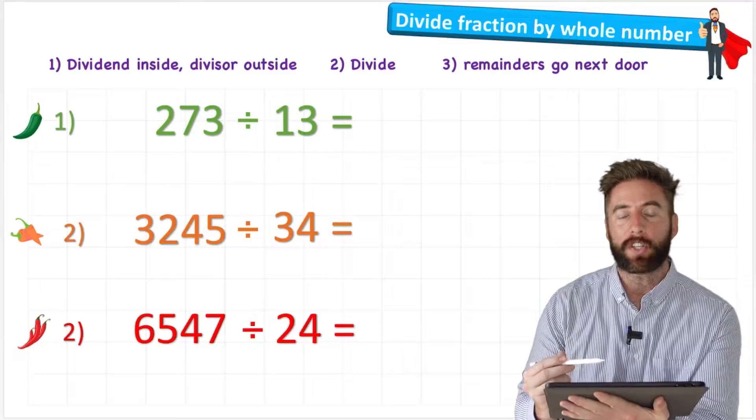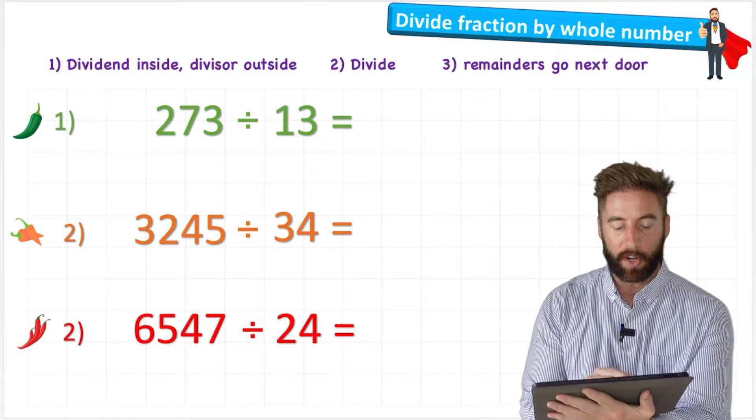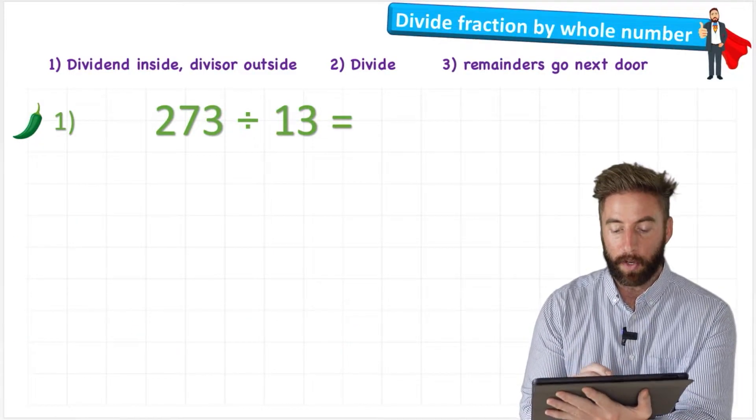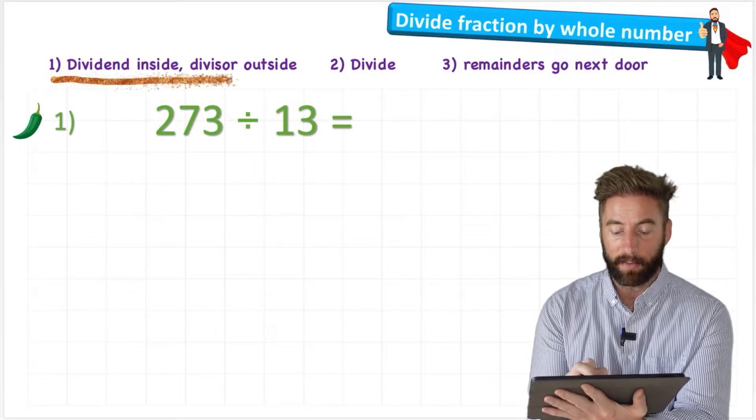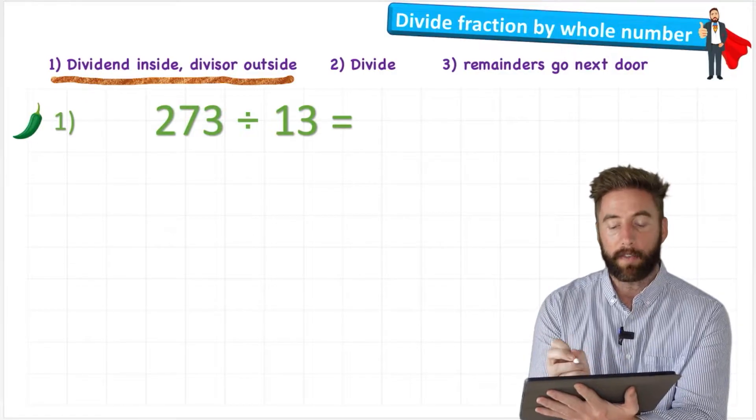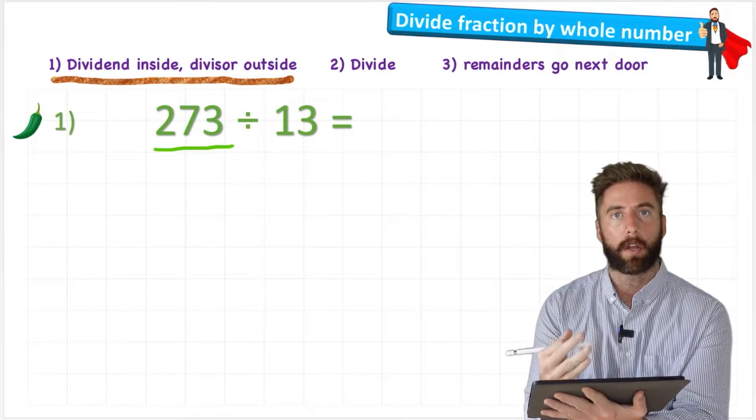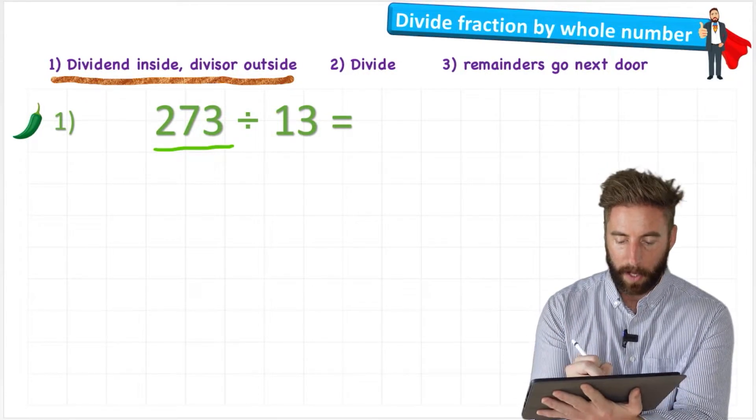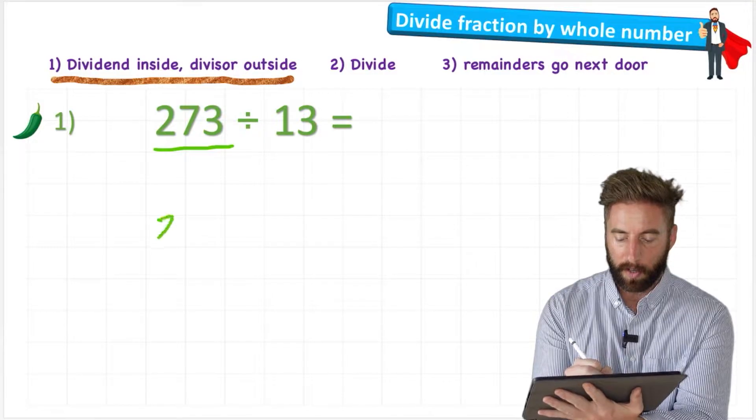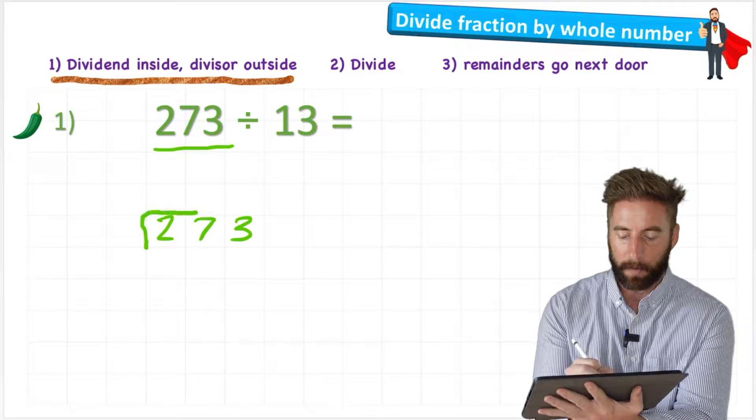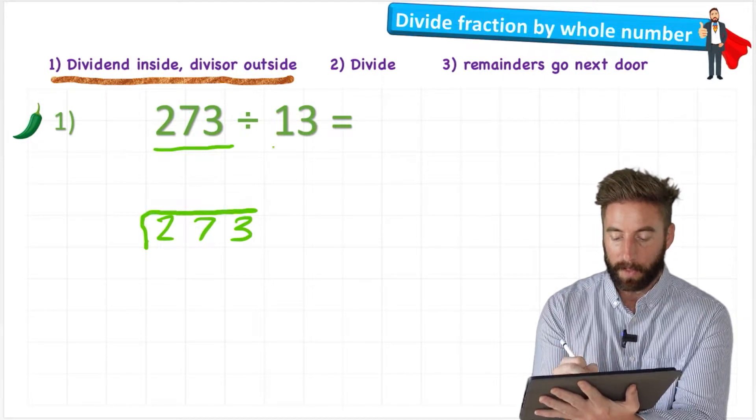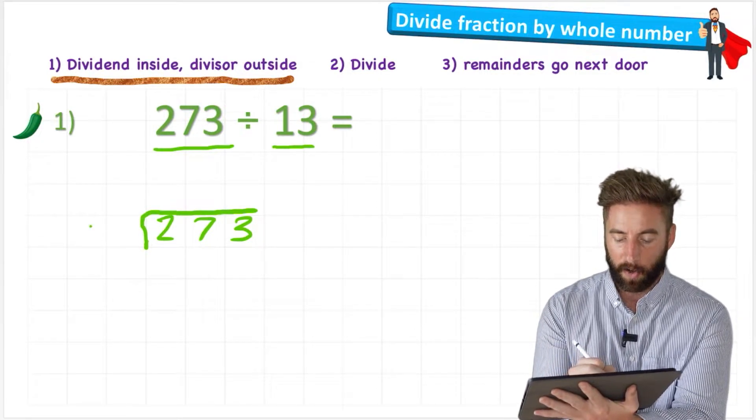Okay, so we have these three questions that slowly get harder. Let's have a look at our first question as we look at our steps. So our steps say to first put the dividend inside and the divisor outside. So our dividend is this number, the number that we are actually dividing. So we're going to have 273 inside our bus stop and then our divisor, which is this number here, the 13, on the outside.